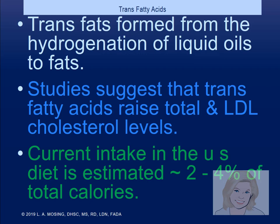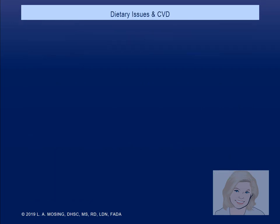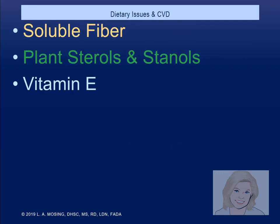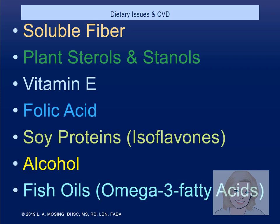When manufacturers removed trans fat, they replaced it with saturated fat in products like cake mixes — which is still negative for heart disease and just makes the product shelf-stable. From PubMed, nutrition-related factors that reduce the risk of heart disease include: soluble fiber, plant sterols and stanols, vitamin E, folic acid, soy protein, alcohol, and fish oil. Studies are often done on nurses because they keep good records over a long period of time.